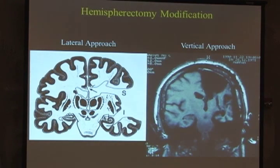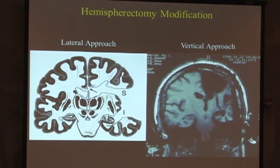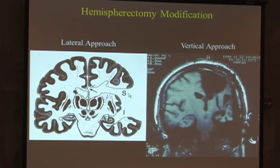The variations include Willemure from Montreal, followed by Johannes Schramm from Germany, who both described a lateral approach where you go through the sylvian fissure and create access to disconnect from within the ventricle, still leaving a fair amount of tissue and the insular behind.